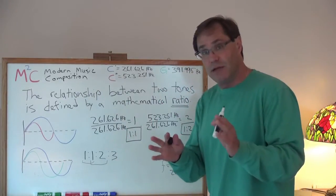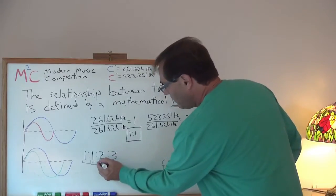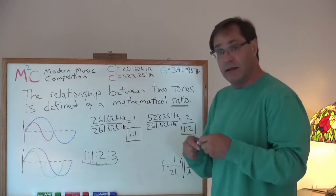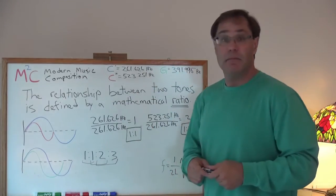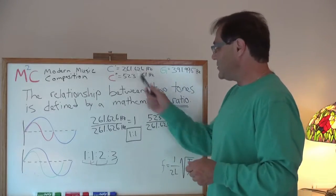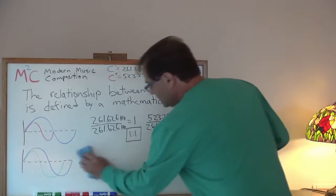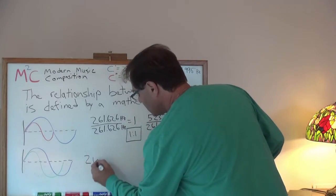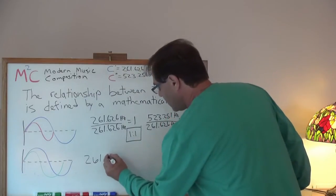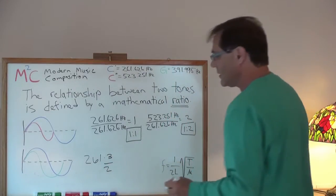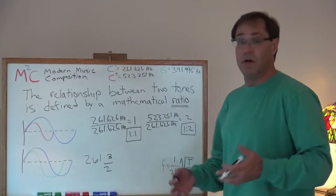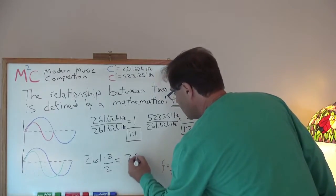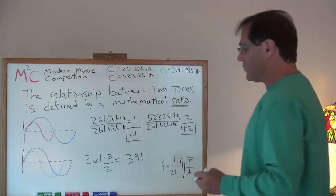What's the next frequency ratio up from what we've been talking about? It turns out it's the two-to-three ratio. How do we calculate that from our fundamental frequency, middle C? I take 261, multiply it by three and divide it by two. That's like taking 261 and multiplying it by 1.5. That gets me 391 hertz.